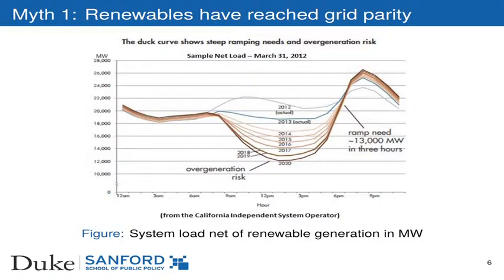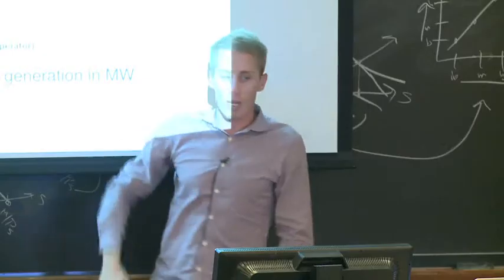So this figure is showing the net generating capacity. It's a model out of California showing the net load on the system in California, net of the renewable generation over the course of a day. And what we see is that the net generation, so that is the generation that's required net of renewables, by the dispatchable generators, is quite low during the early to mid afternoon. But the peak demand occurs later in the day when the sun starts to set. And so the renewables start providing less generation, which requires the dispatchable generators to begin to ramp up and produce more electricity. This is called the ramping cost.